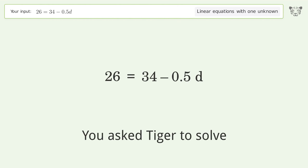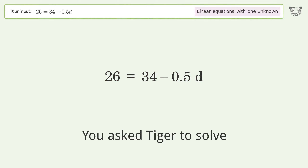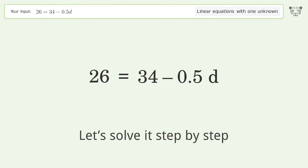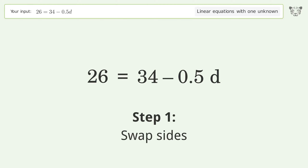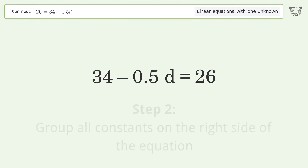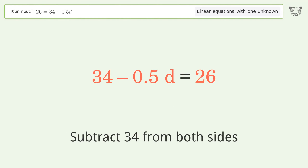Tiger is used to solve a linear equation with one unknown. The equation is 26 = 34 - 0.5d, and the final result is d equals 16. Let's solve it step by step: swap sides and group all constants on the right side of the equation, then subtract 34.